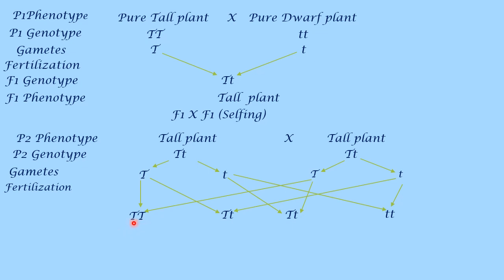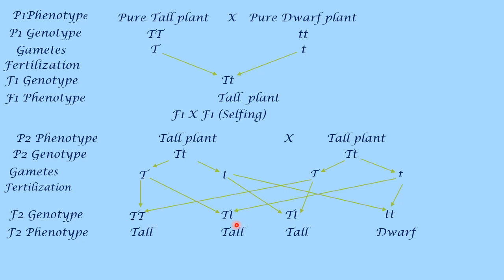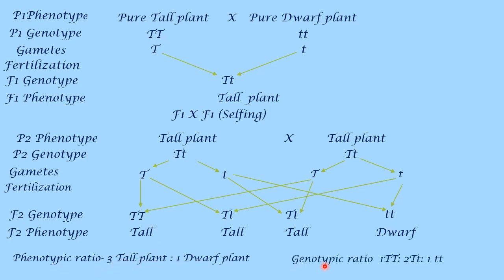Here both genes are dominant and it shows externally as tall plant. In the second case, one is dominant and one is recessive — as capital T is dominant over small t, it will show the character as tall. The third case is also tall. In the last case, both letters are small, meaning both genes are recessive, so it will express as dwarf plant. Therefore, their phenotypic ratio will be three tall plants to one dwarf plant, and their genotypic ratio is 1 capital T capital T : 2 capital T small t : 1 small t small t.